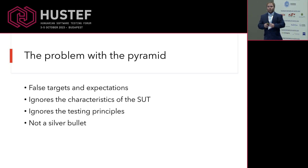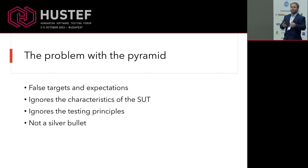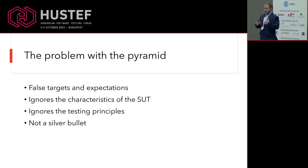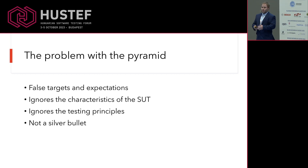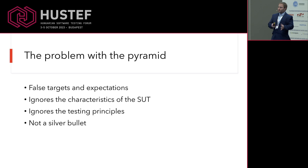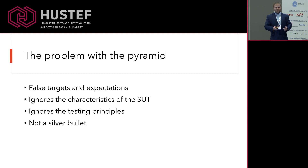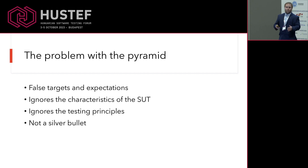Also, if we are speaking about the traditional testing pyramid, it ignores the testing principles, because you are trying to follow a shape — you want to have a perfect testing pyramid shape — which is impossible, because you need to have context-dependent testing. You remember the ISTQB testing principles from the foundation level. It's not a silver bullet, because it cannot solve everything for us. It gives just a recommendation for how we should utilize the testing, but we need to be conscious about how we align our testing based on our application.